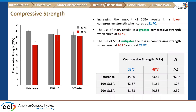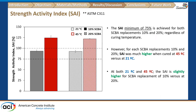For compressive strength, increasing the amount of ash results in lower compressive strength at 21°C alone. However, at 45°C, the ash increases compressive strength compared to the reference, indicating that the ash mitigates the loss in compressive strength when curing at 45°C versus 21°C. For the strength activity index, all mixes met the ASTM C311 minimum requirement of 75%, regardless of replacement level and curing temperature. At 45°C, the strength activity index exceeded 75% by a considerable margin.